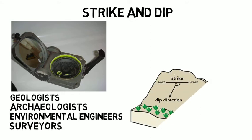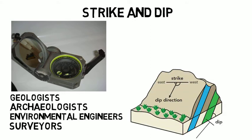The dip is measured to determine the acute angle and the direction that a rock's surface makes with the horizontal plane. If you have ever gone on a hike, you have likely observed how layers of rock appear to have been stacked on top of each other. This would be considered a bedding plane, which is the surface that separates each successive layer of a stratified rock from its preceding layer.